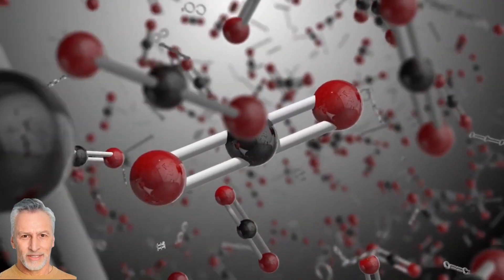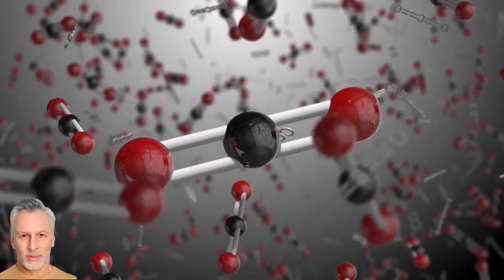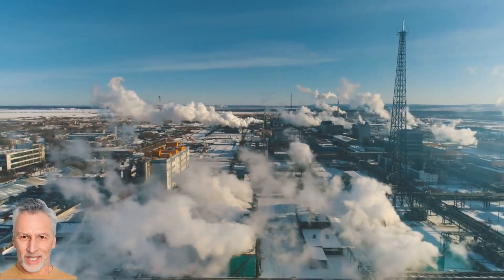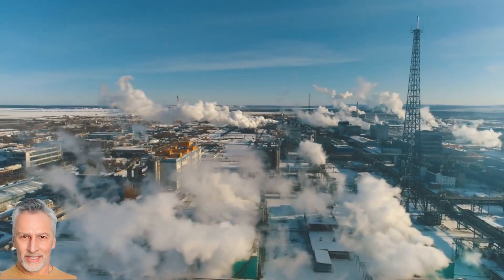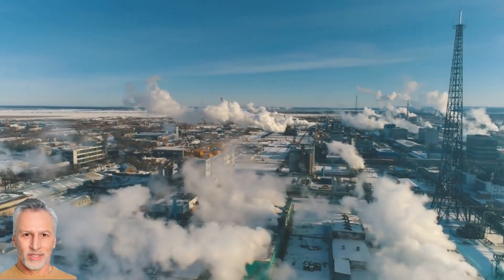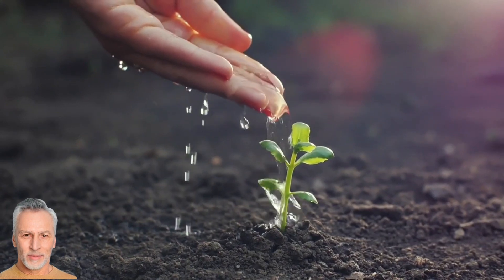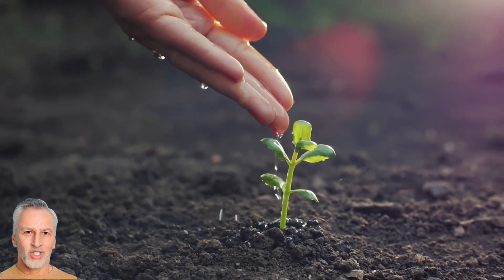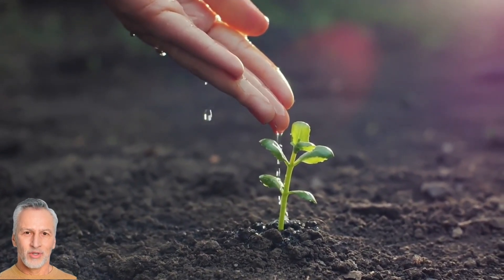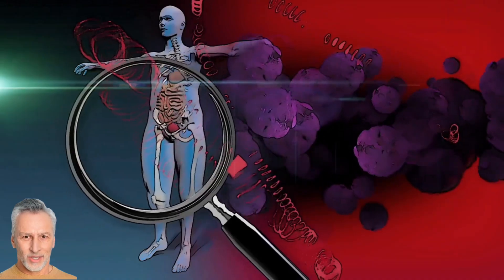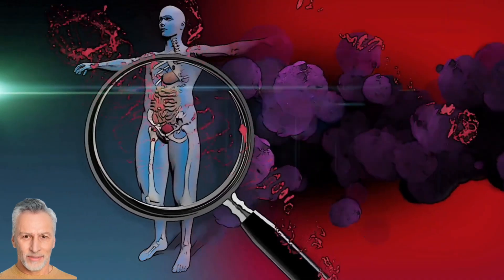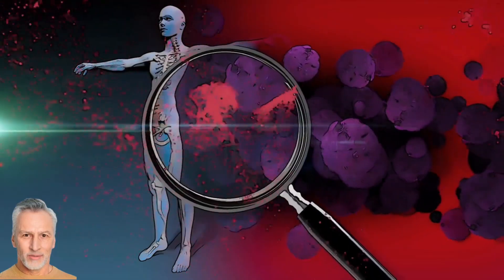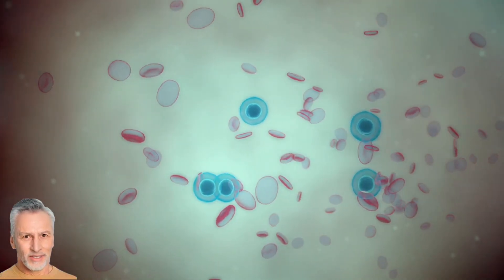Carbon dating is a method used to determine the age of ancient objects by analyzing the amount of carbon-14 (C-14) remaining in them. Carbon-14 is a type of carbon that is naturally present in the atmosphere. Plants absorb carbon dioxide from the air, and animals acquire carbon-14 by consuming plants or other animals. While an organism is alive, the amount of carbon-14 in its body remains constant.